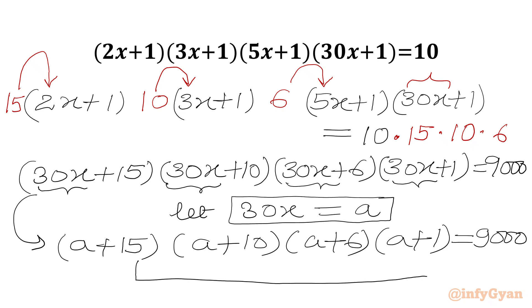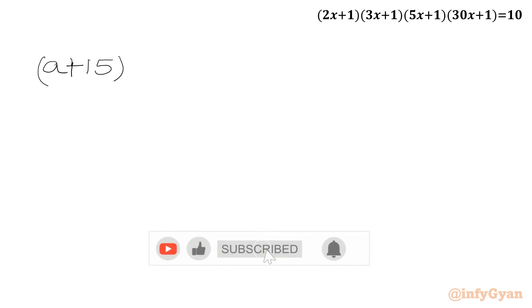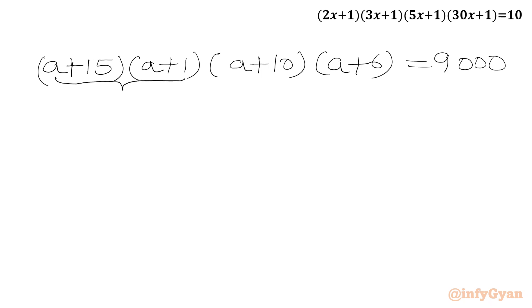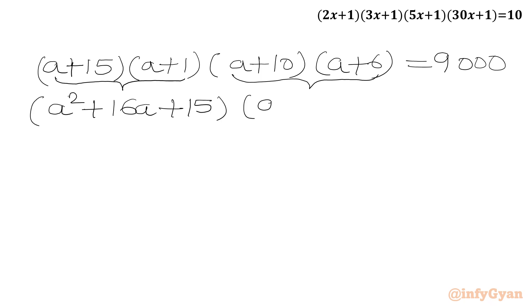Now notice that 15+1 = 16 and 10+6 = 16 as well. So we will club the first and last bracket together, and the second and third bracket together. Writing the equation: (A+15)(A+1) · (A+10)(A+6) = 9000. Multiplying each pair we get (A²+16A+15)(A²+16A+60) = 9000.